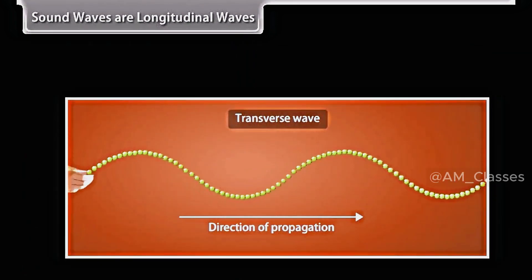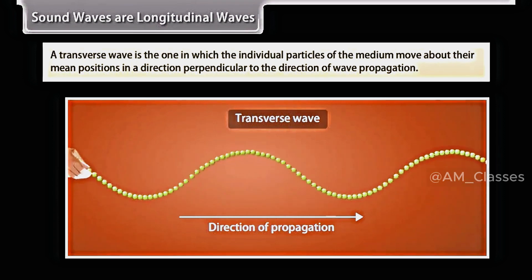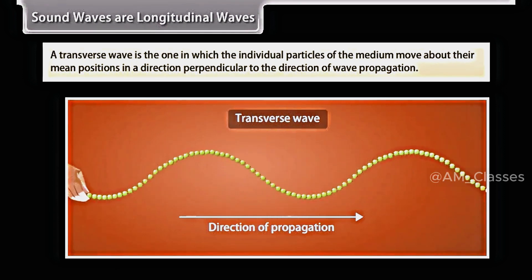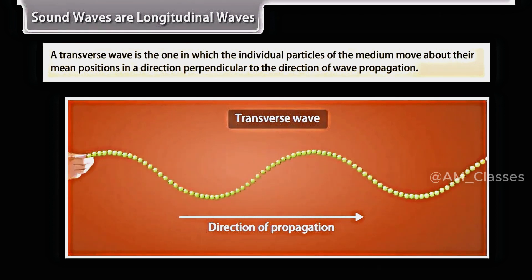There is also another type of wave called a transverse wave. A transverse wave is the one in which the individual particles of the medium move about their mean positions in a direction perpendicular to the direction of wave propagation.